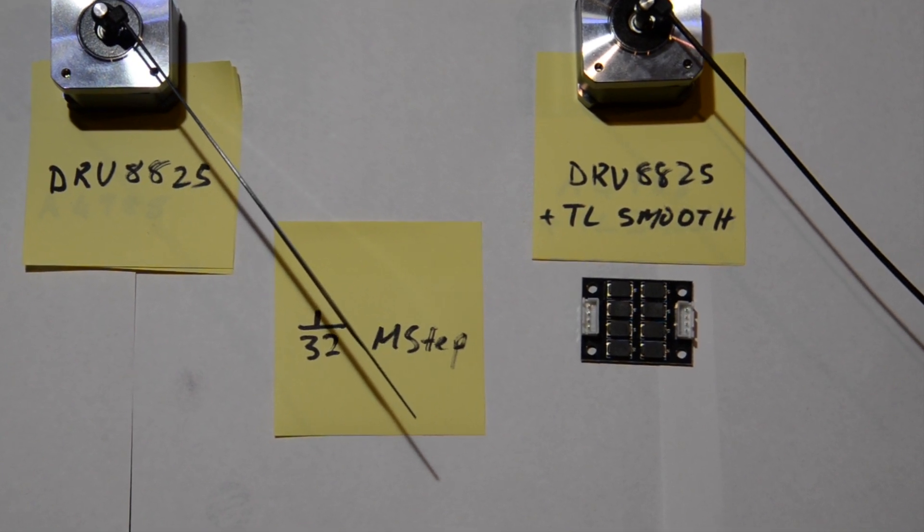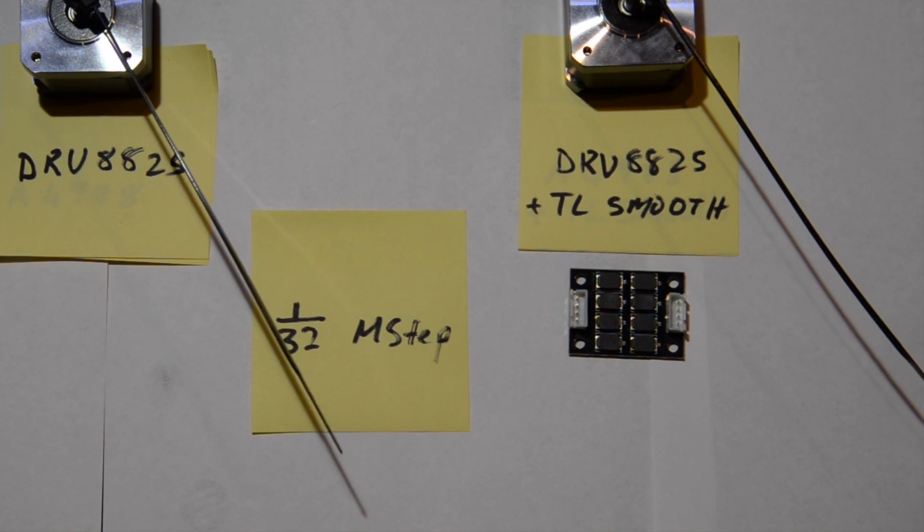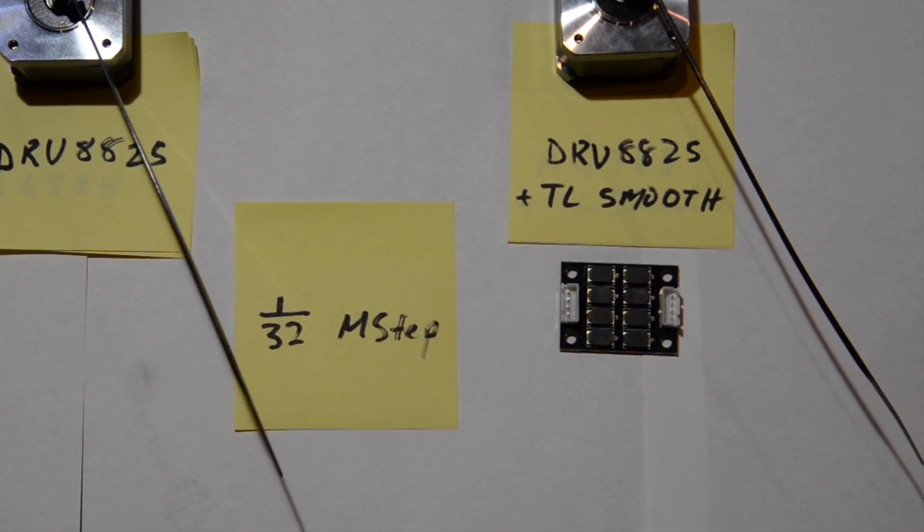Here you can clearly see the difference that the TL Smoother makes. The motor on the right is super smooth while the one on the left jumps.